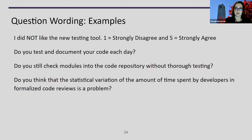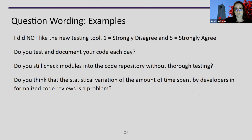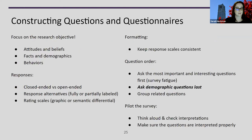Here are examples of problematic questions: 'I did not like this new testing tool' answered with a Likert scale uses negative wording. 'Do you test and document your code each day?' is a leading question. 'Do you still check modules into the code repository without thorough testing?' might make someone feel guilty and lead them toward a particular answer. 'Do you think that the statistical variation of the amount of time spent by developers in formalized code review is a problem?' is also a leading question.